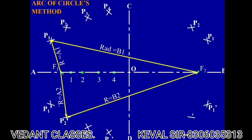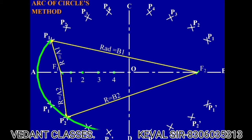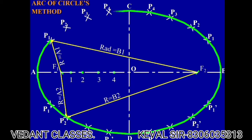On the other side, carry on the same thing. Just keep taking the arcs and keep marking the points; one by one you will get all such points. Now what you need to do is join all the points. If you join all the points you will get an ellipse, as you can see here on the screen.